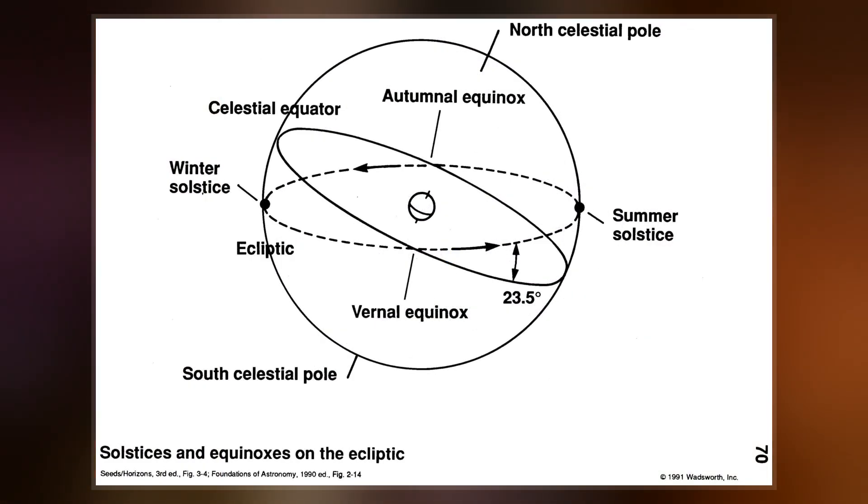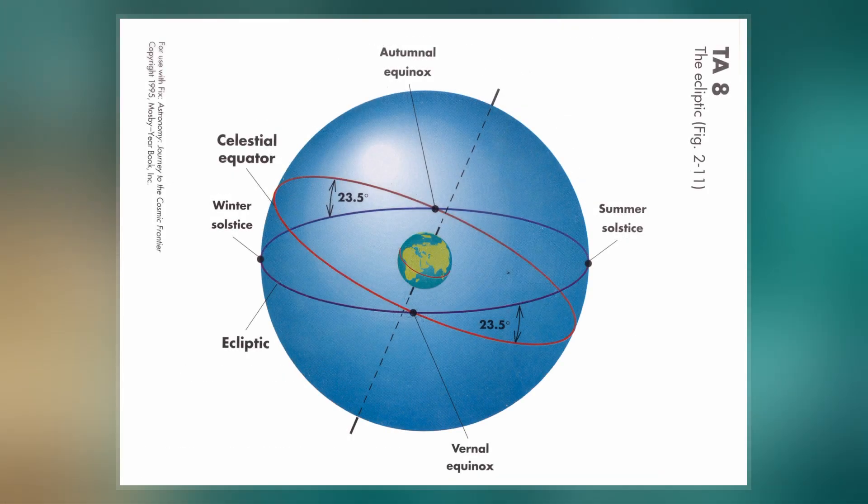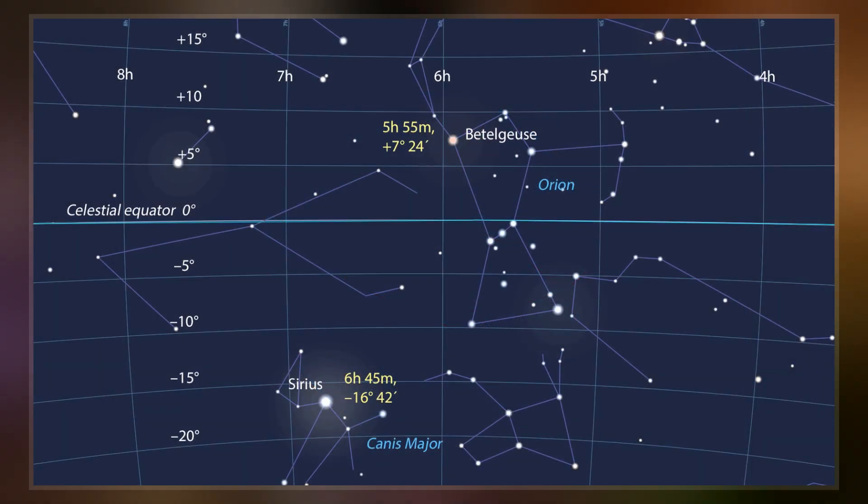At the poles, the celestial equator coincides with the astronomical horizon. At all latitudes, the celestial equator is a uniform arc or circle because the observer is only finitely far from the plane of the celestial equator, but infinitely far from the celestial equator itself.